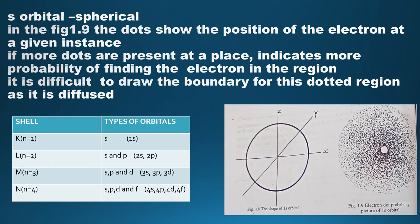The number 1 in 1s refers to the principal quantum number n. Similarly, the s orbitals belonging to the second shell is 2s, third shell is 3s, and fourth shell is 4s. It should be noted that all s orbitals are spherical; however, 2s, 3s, and 4s orbitals will have nodal regions. Nodal regions correspond to zero probability of locating the electron in that region — that means the probability of finding the electron there is zero. The shapes of these orbitals will be discussed in the higher classes.